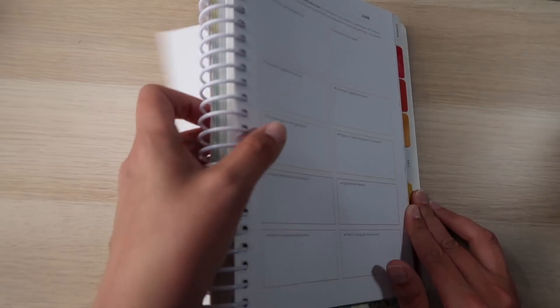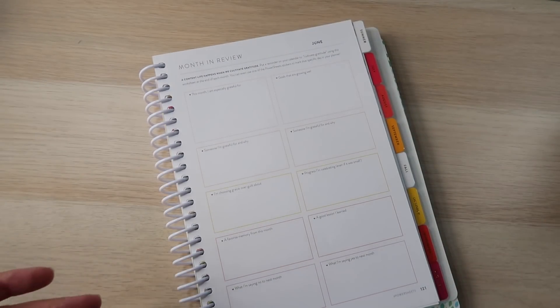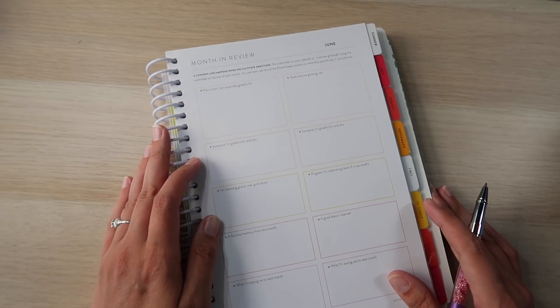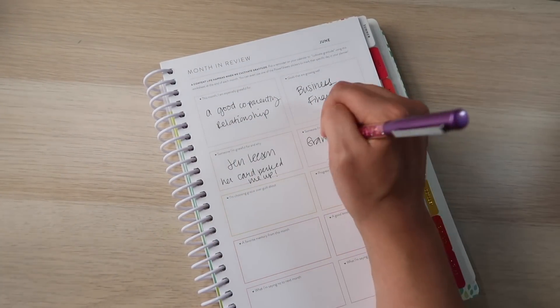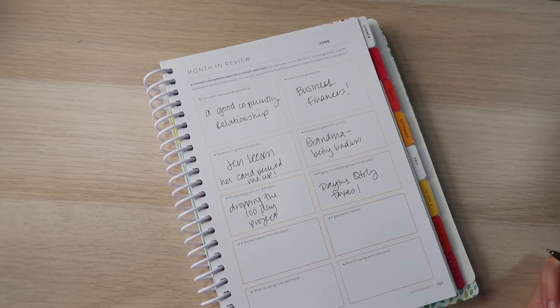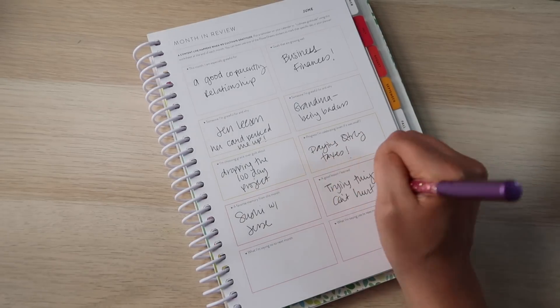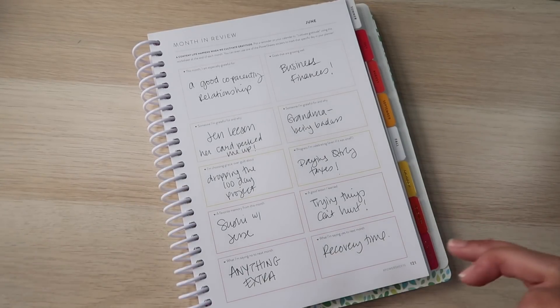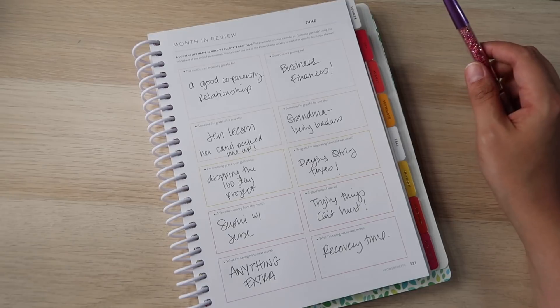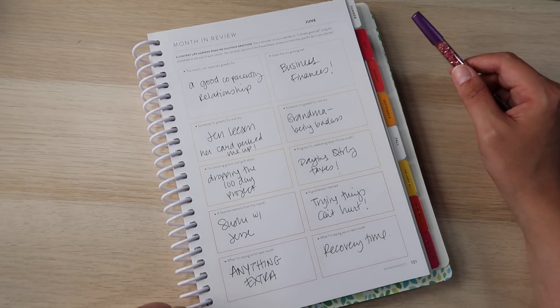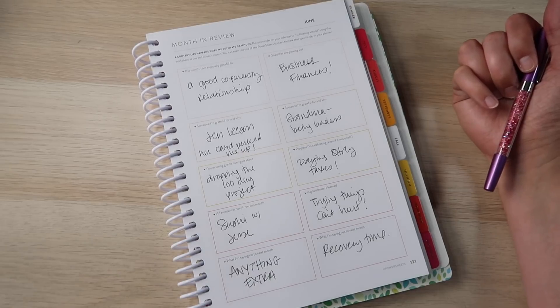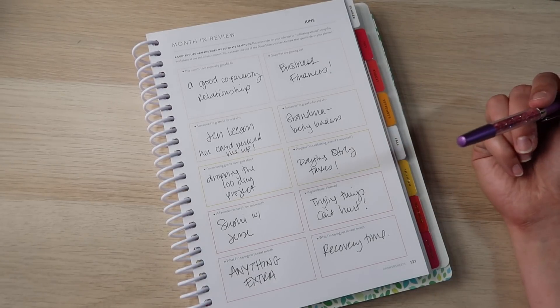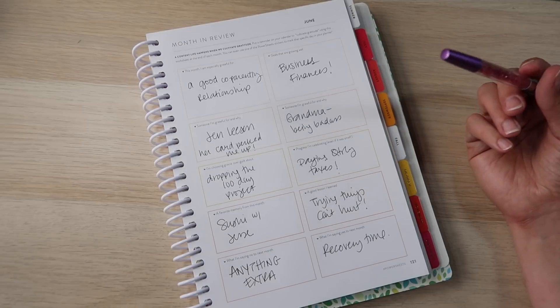I'm going to go to the month in review and I'm going to review it now, even though we still have a vacation coming up because might as well. All right. So here is my June month in review. Let's go over it. This month I am especially grateful for my good co-parenting relationship with the other household, Jesse's and my relationship with my ex-husband and his wife. We needed to lean on that this month quite a bit. Goals that are going well. I'm so excited about my business finances. It actually goes to here. Progress I'm celebrating even if it's small. Paying quarterly taxes isn't small. I am very proud of myself.